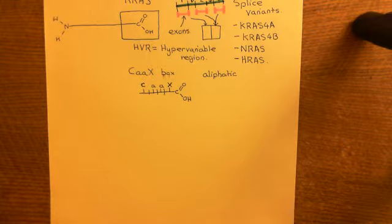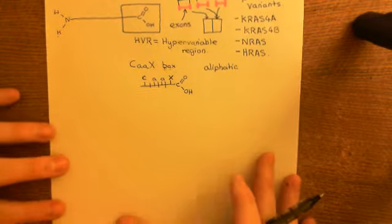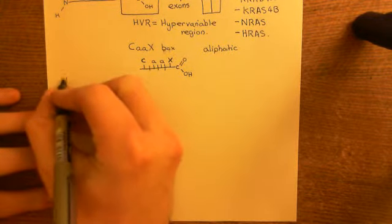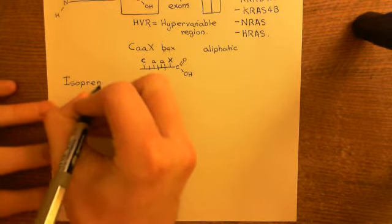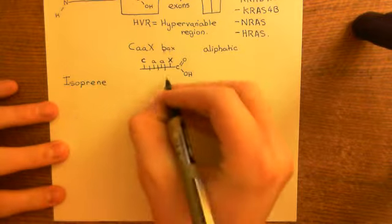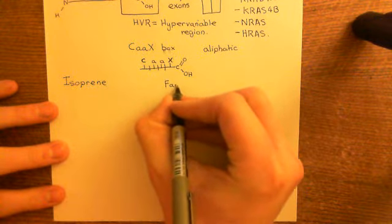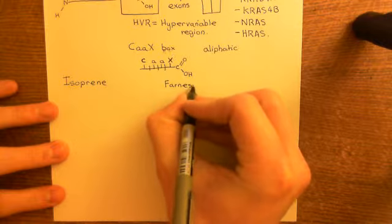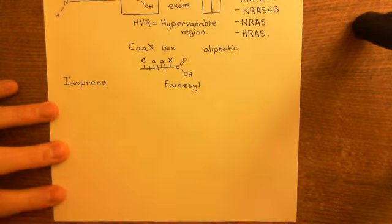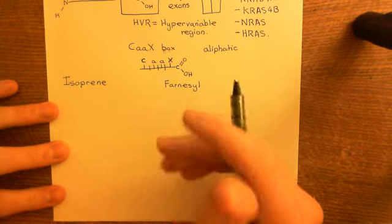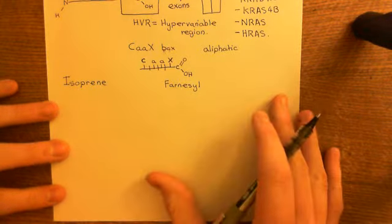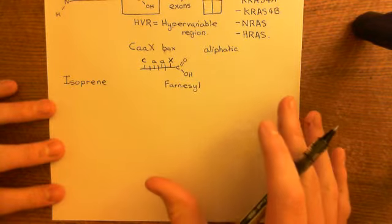I want to show you what this means, i.e. what is a farnesyl group. To do that, I need to explain to you the structure of a molecule called isoprene, because farnesyl is a prenyl group. Farnesyl is the group that we are going to add onto our RAS protein first, and again it is a lipid modification of proteins. There are three major types of ways that you can modify proteins by sticking lipids onto them.